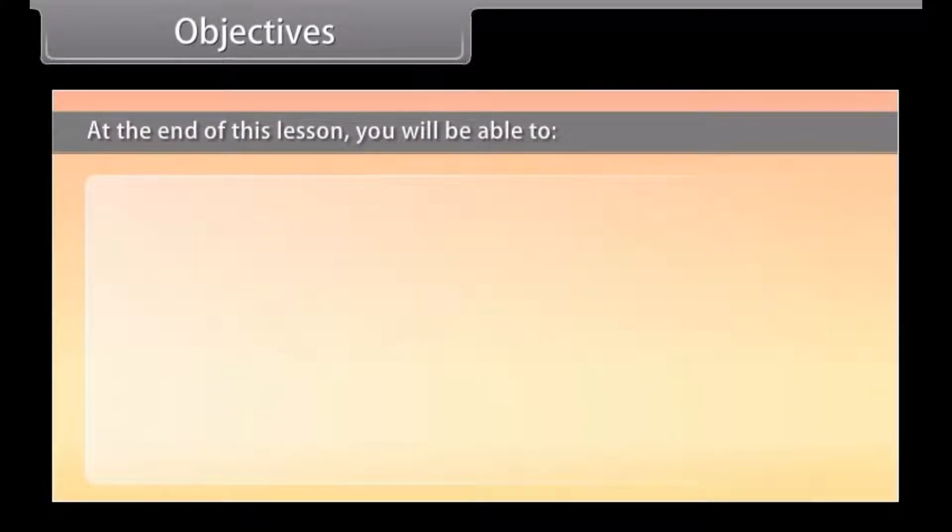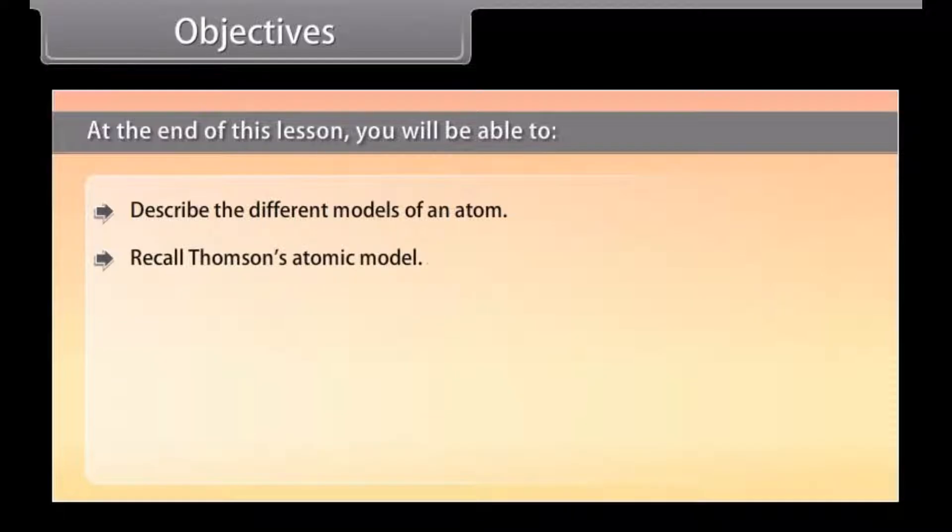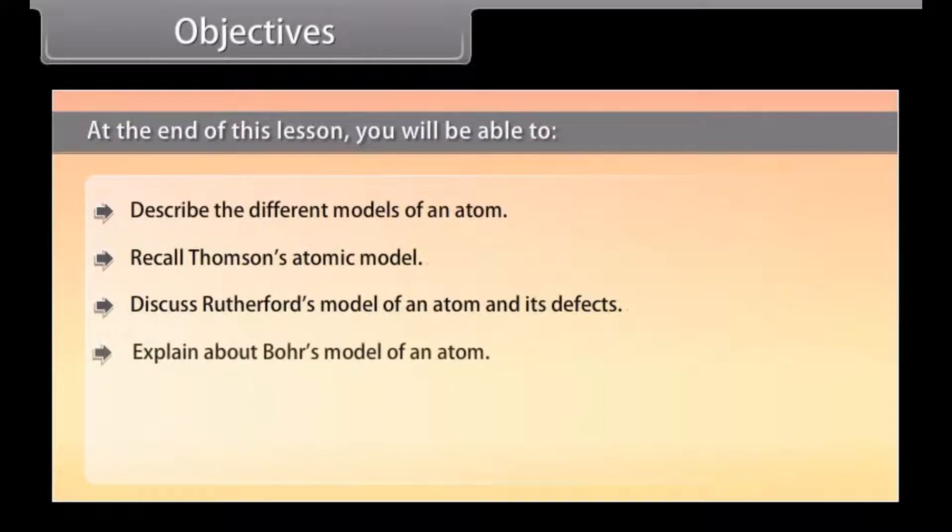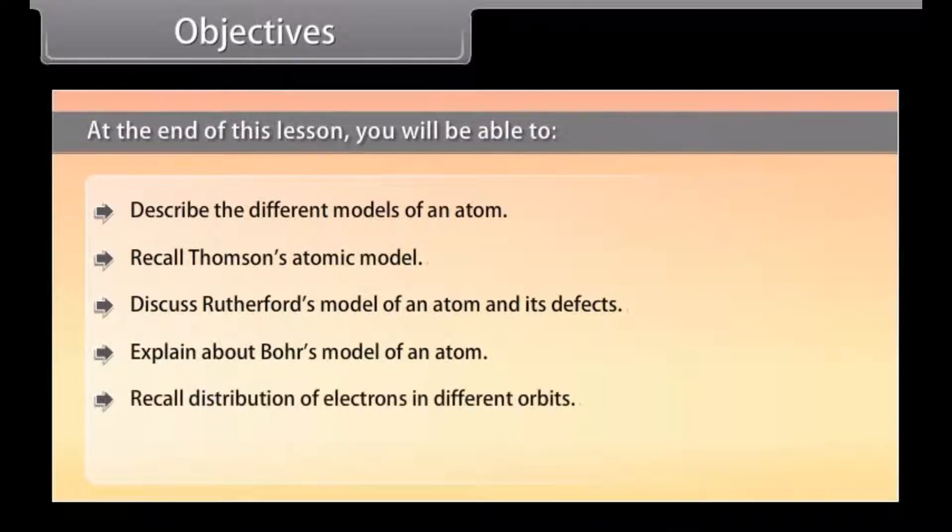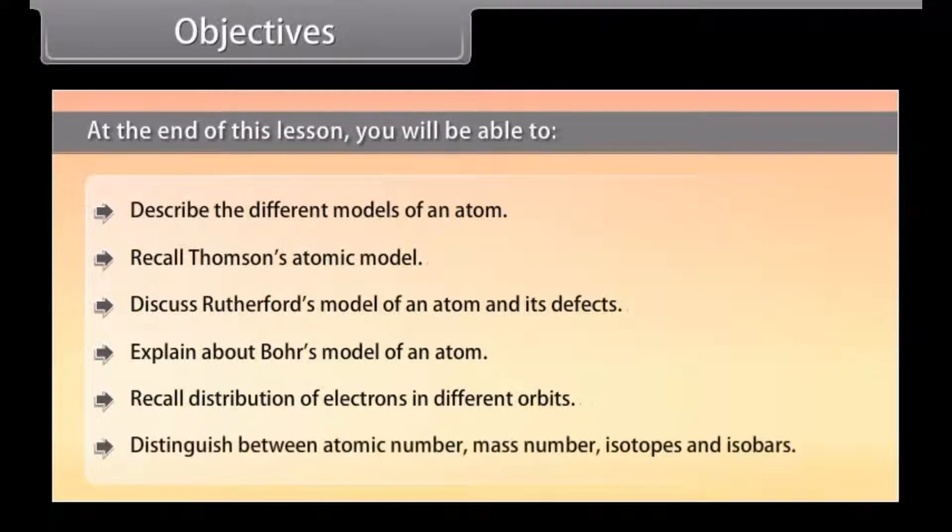Objectives. At the end of this lesson, you will be able to describe the different models of an atom, recall Thomson's atomic model, discuss Rutherford's model of an atom and its defects, explain about Bohr's model of an atom, recall distribution of electrons in different orbits, distinguish between atomic number, mass number, isotopes and isobars.